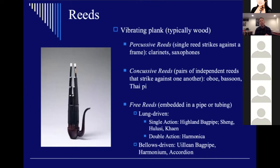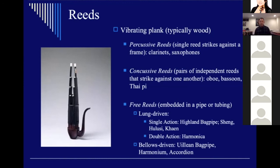Apart from reed instruments where the reed goes in your mouth, there are free reed instruments, where the reed is embedded within the tube. You blow through it and the reed vibrates freely — you're not manipulating the reed with your mouth. There are two categories of free reeds: lung-driven free reeds, where the air originates in the lungs, and bellows-driven free reeds, where an air pump like an accordion or Indian harmonium drives the air.